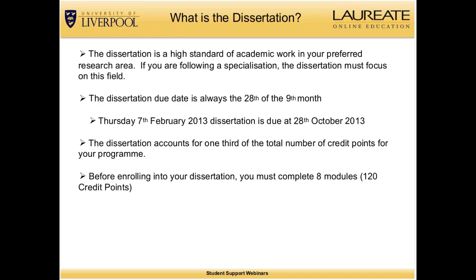Your dissertation will account for one third of the total number of credit points for your program. An entire master's program is 180 credit points and your dissertation comprises 60 of these. Before enrolling in your dissertation, you must complete eight modules which is 120 credit points. It is not possible to start your dissertation if you have not successfully completed all eight modules.